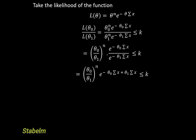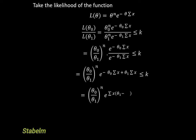Now that we have this, we have summation X appearing twice, so we can factorize. To avoid a negative coefficient, we write it as (θ₁ − θ₀). This gives us (θ₀/θ₁)^N · e^[ΣX(θ₁ − θ₀)] ≤ K. We have now simplified to this step.